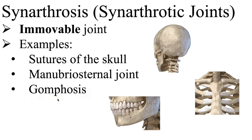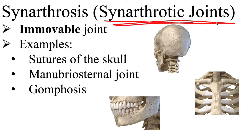Another example of synarthrotic joints is gomphosis. This is a fibrous immovable joint where the roots of the teeth, known as a peg, articulate with the sockets of the mandible and maxilla. This makes sense — we really don't want our teeth moving around either. These are all known as synarthrotic joints.